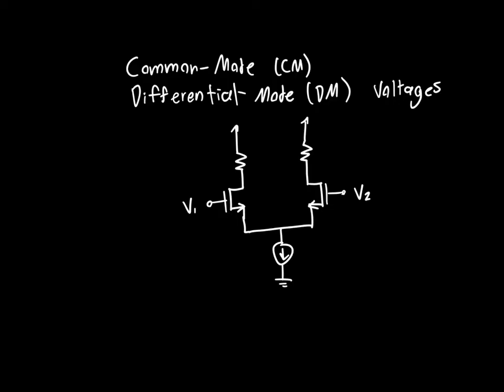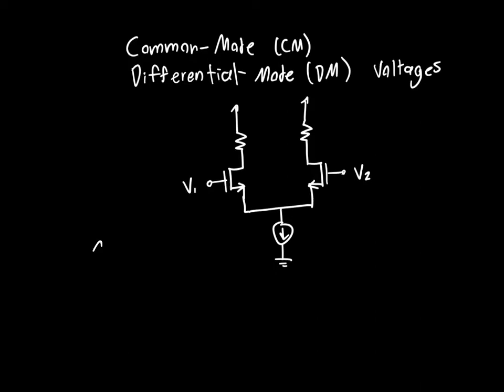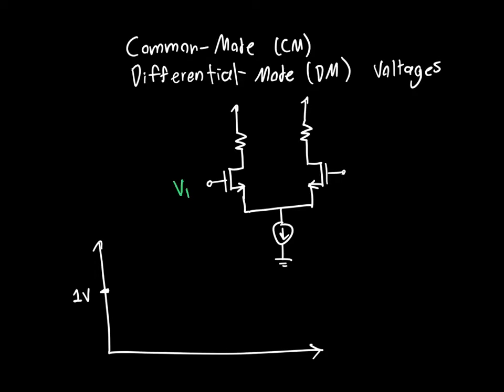Physically, v1 and v2 might not be independent of each other. These voltages might be the same, they might be out of phase, or they might be differential. Let's take the example where the two voltages are completely out of phase. Say they're both biased about one volt. We'll draw v1 in green and v2 in blue. When using amplifiers, we always have to bias our signals about a certain point — this is a good way of illustrating the difference between common mode and differential mode voltages.